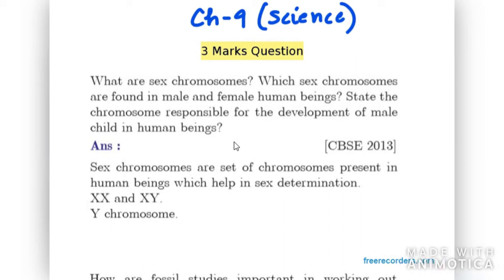Let's start with Chapter 9: Heredity and Evolution. Today I'll be covering three-mark questions. Question one says: What are sex chromosomes? Which sex chromosomes are found in male and female human beings? State the chromosome responsible for the development of a male child in human beings. First, you have to define what sex chromosomes are — this is for one mark.